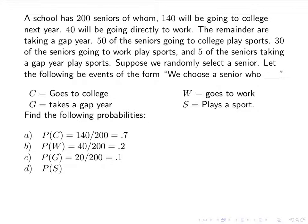The probability of S — that someone plays a sport — is found by adding all students playing sports: 50 going to college, plus 30 going to work, plus 5 taking a gap year, equals 85. We can simply add them because no senior is in more than one category. So 85 out of 200 gives a probability of 0.425.